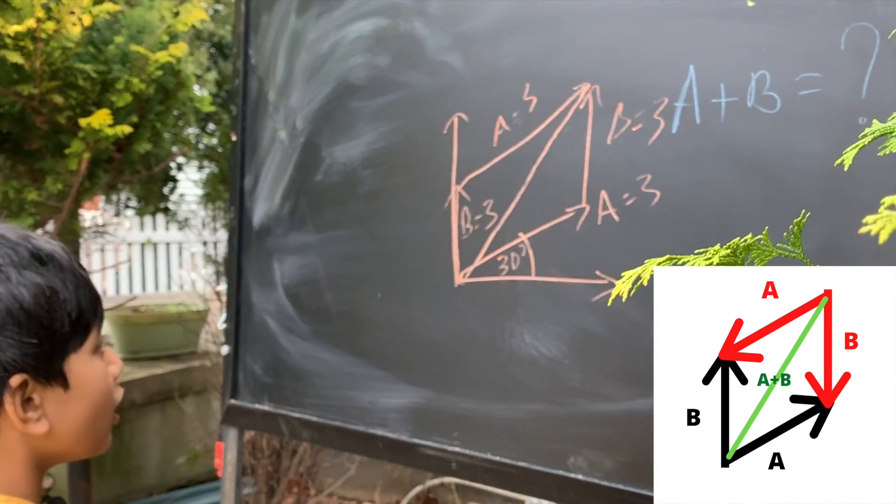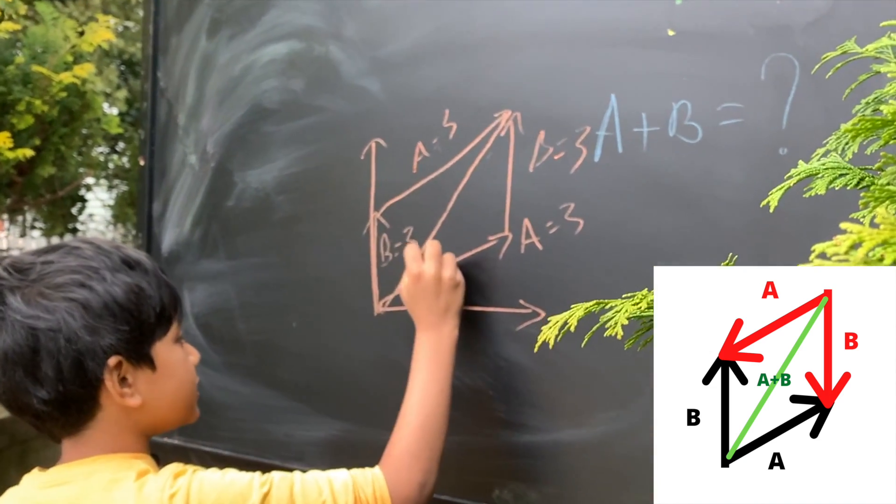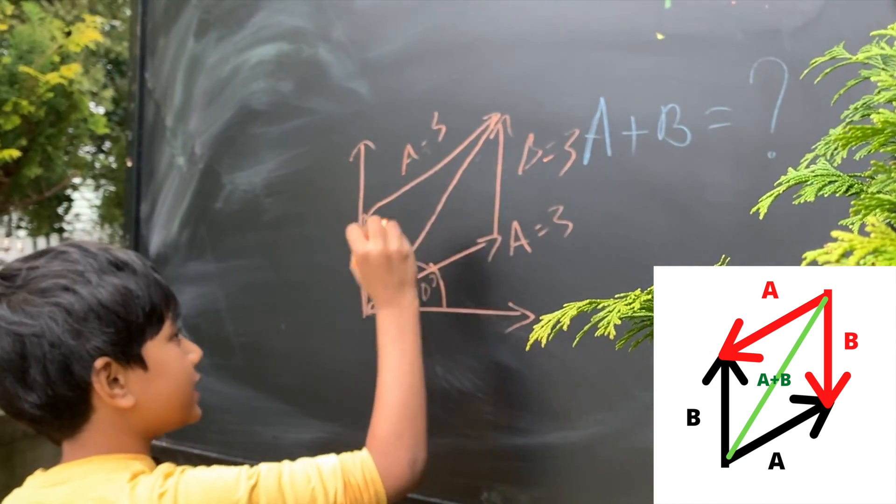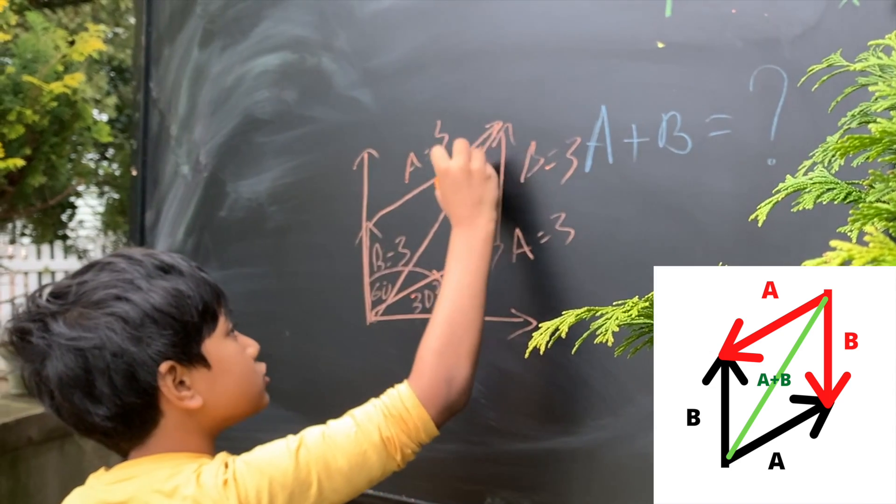Anyways, by law, if this is 30, this is 60. Which means this must also be 60.